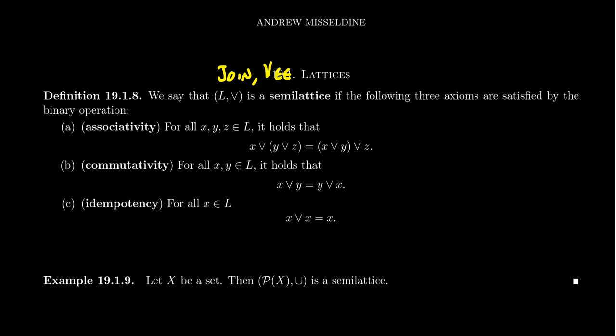Our third axiom really is going to be deviant from what we expected with groups: idempotency. We require that every element be idempotent. That means for some element X inside our set L, X join X equals X — if you take an element and operate it with itself, you always get back the original element. This is a very alien concept from groups, because in a group the only idempotent element is the identity. In a semi-lattice, every element is required to be idempotent.